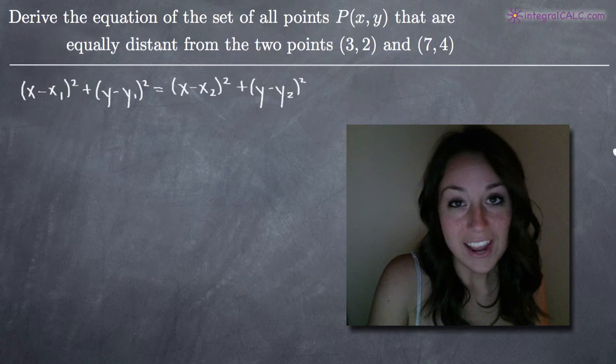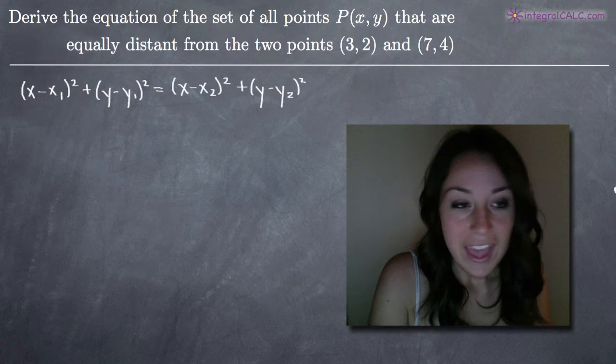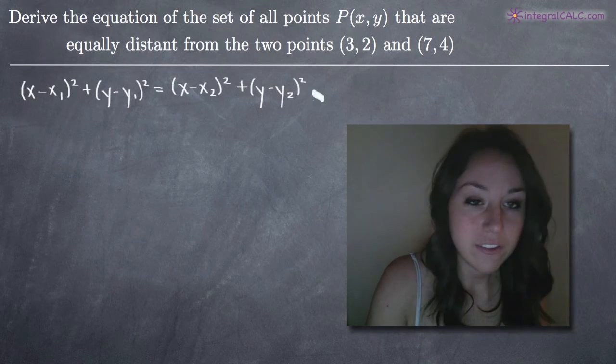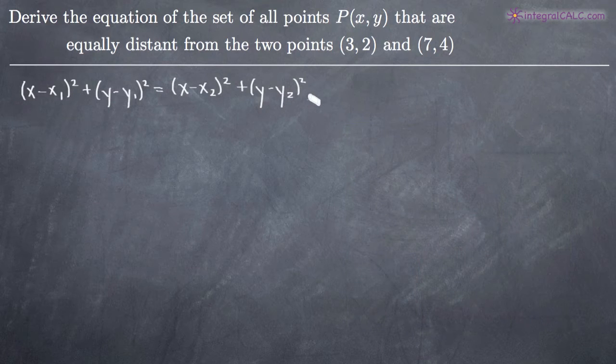Today, we're going to be doing another problem from our analytic geometry section. In this particular problem, we've been asked to find the equation of the set of all points P(x,y) that are equally distant from the two points (3,2) and (7,4).